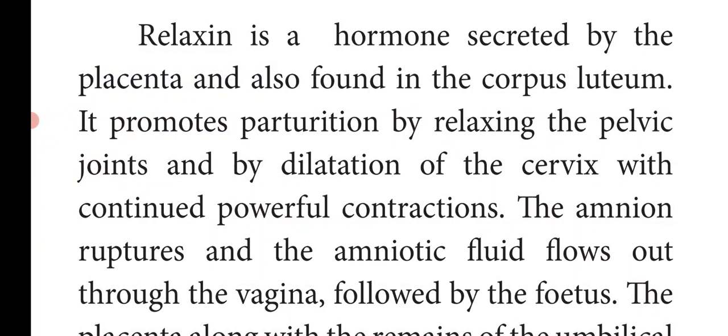Before parturition, the amnion ruptures and the amniotic fluid flows out through the vagina, followed by the fetus. The placenta along with the remains of the umbilical cord — called the afterbirth — is expelled out after delivery. These organs formed only during pregnancy will come outside the body after delivery.